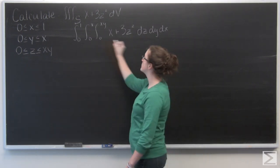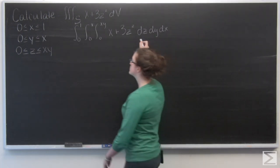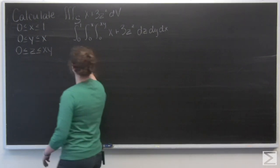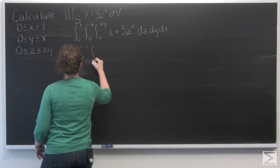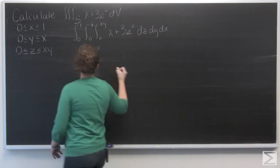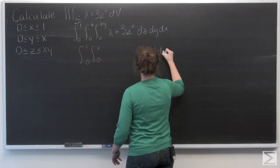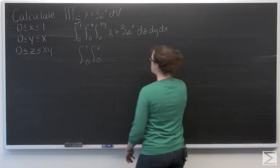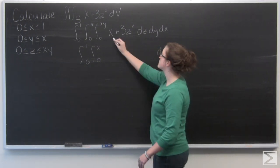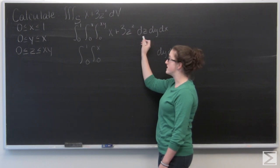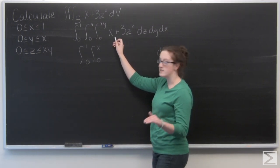So we're going to evaluate the inside integral first. I'm going to go ahead and carry down the second two integrations. So I'll just put them on the outside. Now I just want to look at this. First we're integrating with respect to z, so that means this x is just a constant.